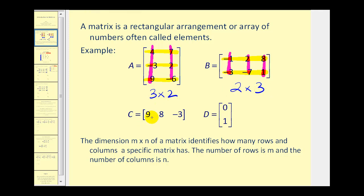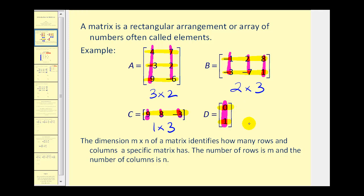Matrix C has one row and one, two, three columns. Therefore, it's a one by three matrix, sometimes called a row matrix because it has a single row. And matrix D has one, two rows and one column. Therefore, it is a two by one matrix, and this can also be called a column matrix.